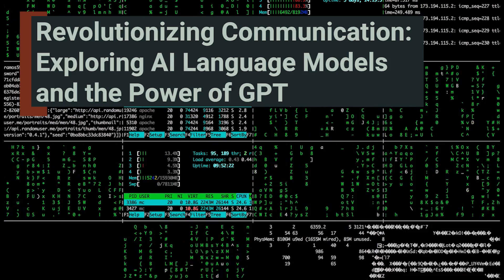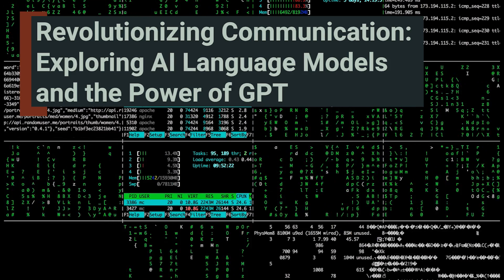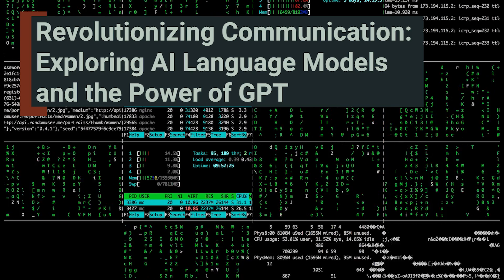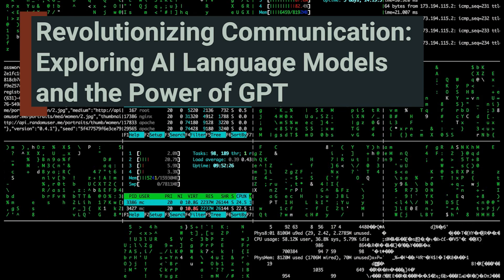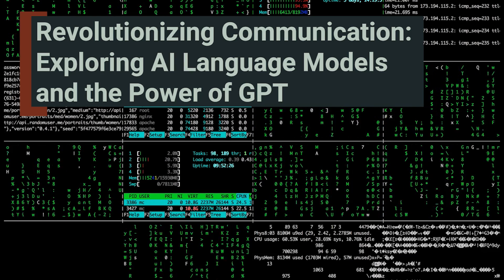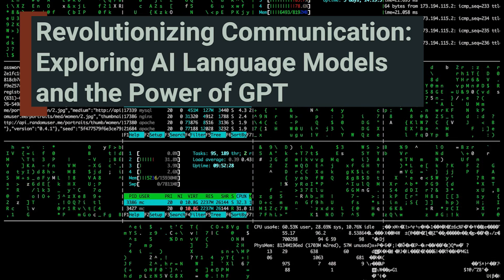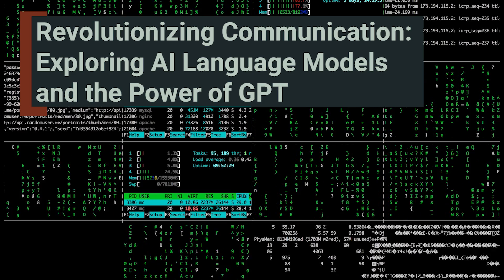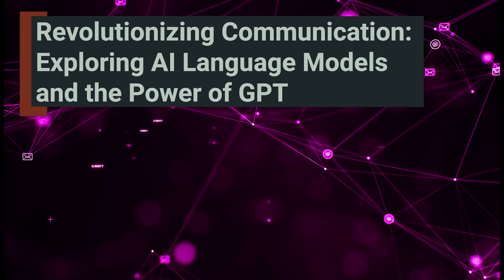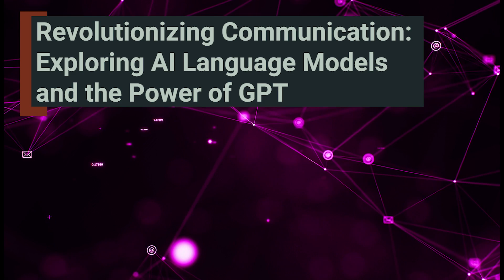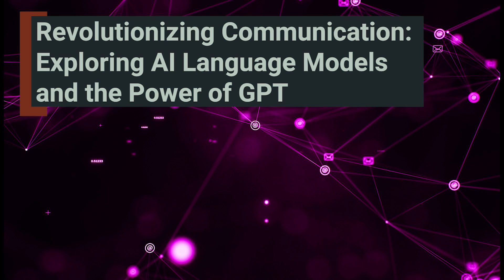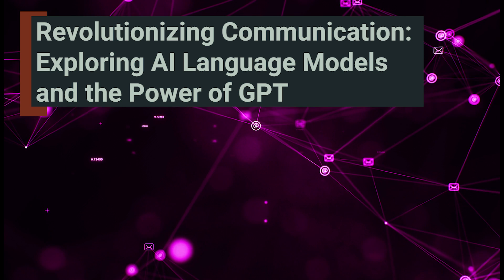To generate its responses, GPT processes information through multiple layers of artificial neurons in order to identify patterns and make predictions. It uses a technique called deep learning to do this, which involves processing information through many layers of neural networks.